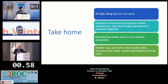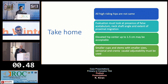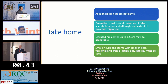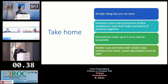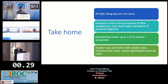In summary: all high-riding hips are not the same. We must evaluate carefully the pattern of shortening and the neck-shaft angle, the presence of a false acetabulum — in which case you will not need as much of a shortening osteotomy — and the extent of proximal migration. Up to 1.5 centimeters of elevated hip center has been published as acceptable and can simplify a more complex operation. Smaller cups and stems with versional and cranio-caudal adjustability must be used. Thank you.